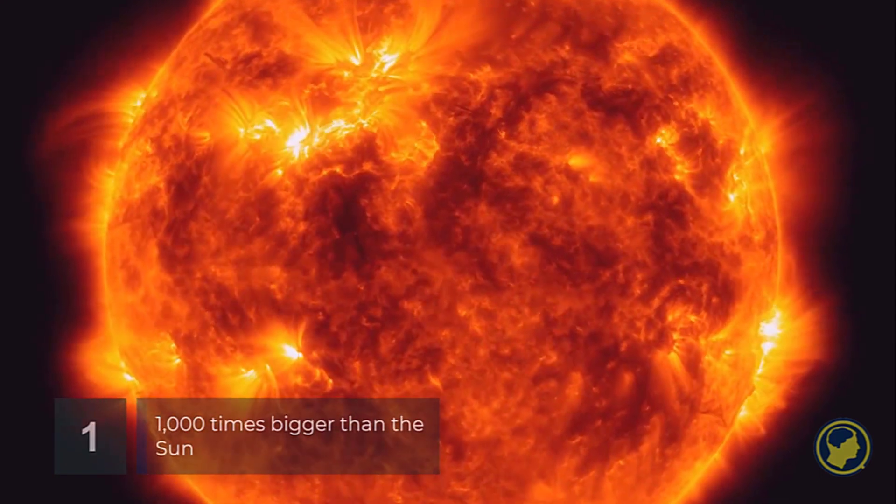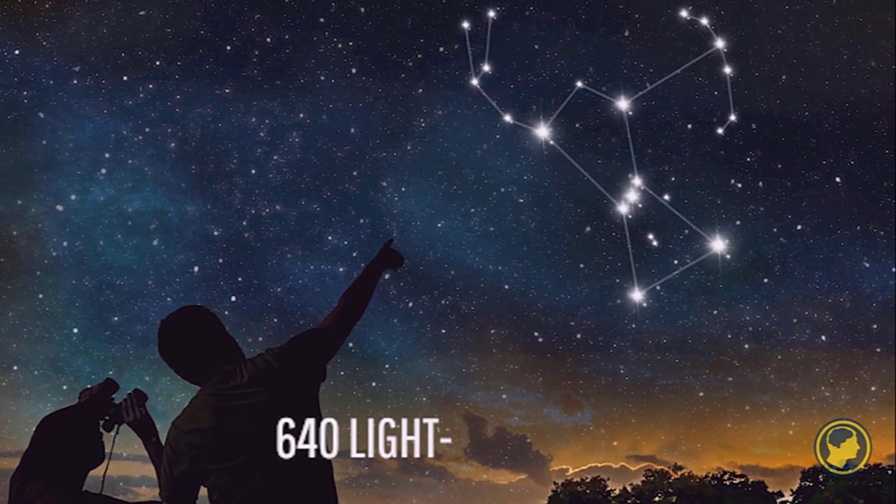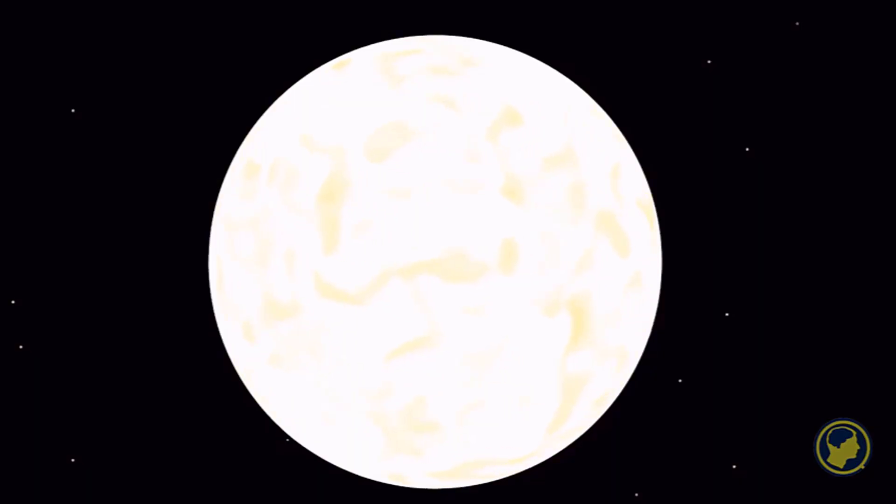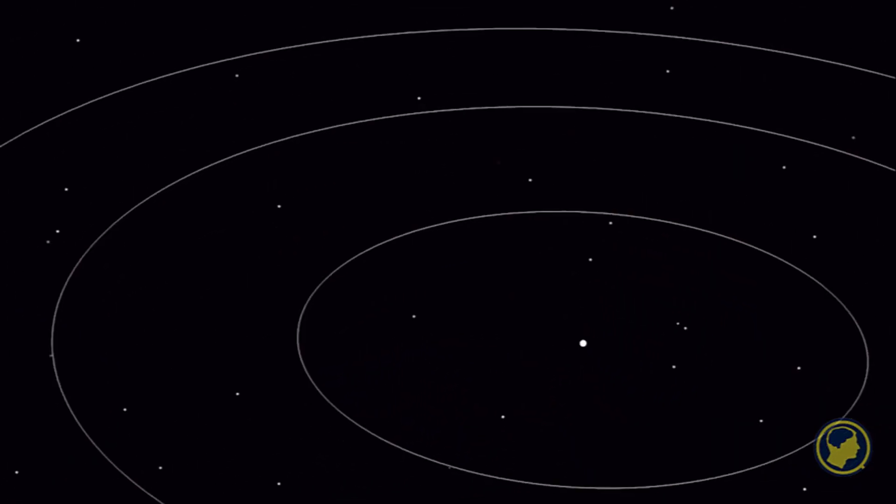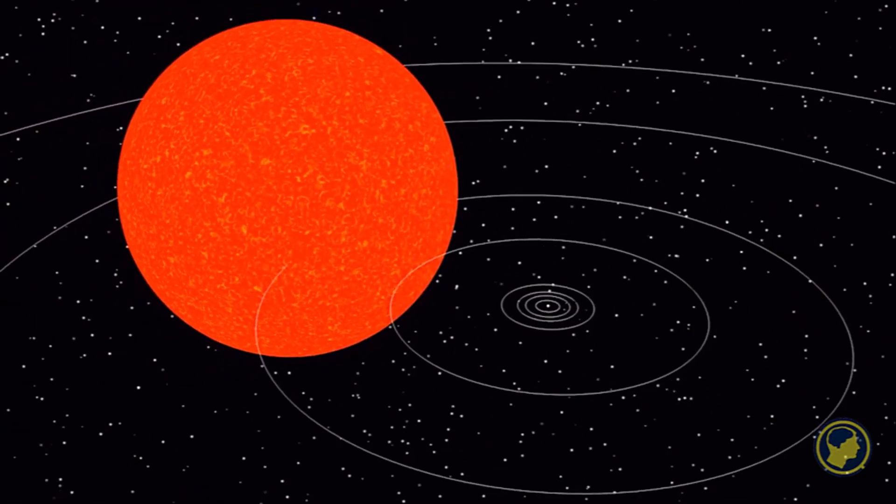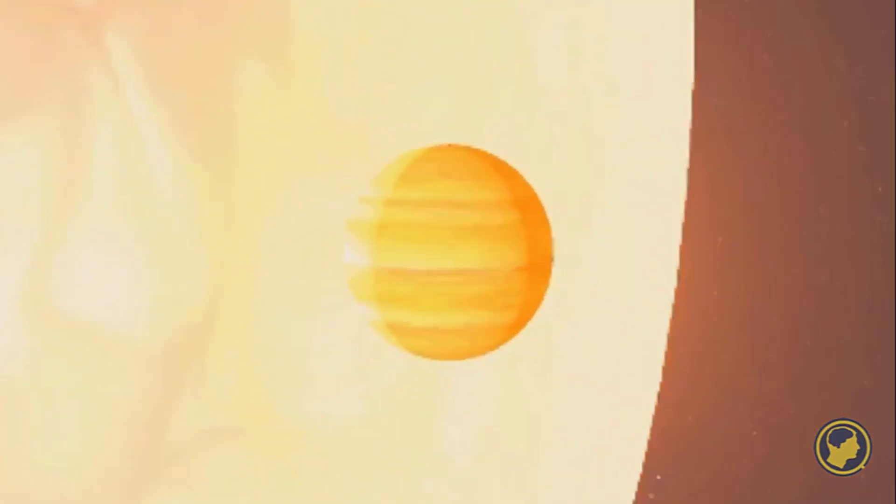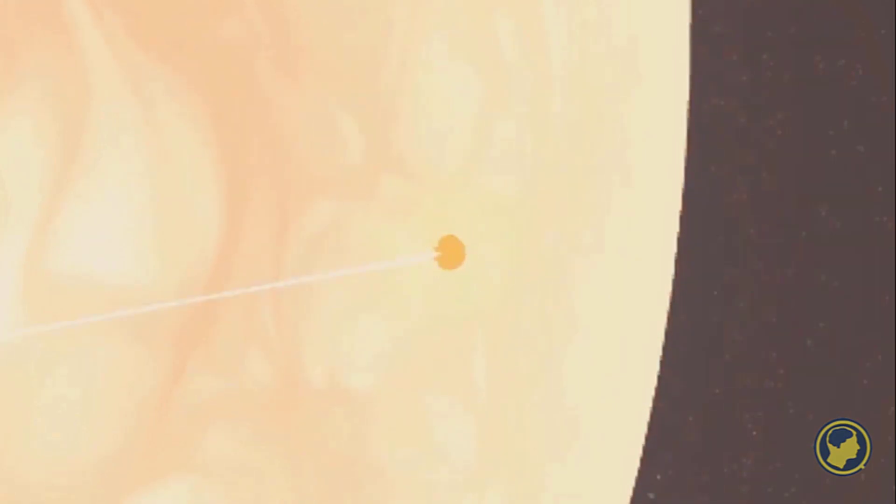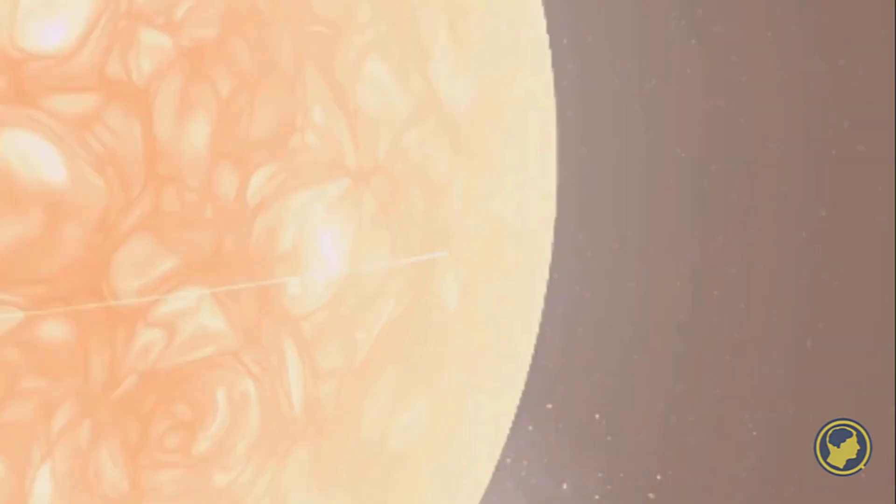Betelgeuse is a red supergiant star located 640 light years away. It is somewhere between 10 to 20 times the mass of the sun, but 700 to 1000 times its radius. If it replaced our solar system's sun, its surface would reach the asteroid belt and extend out towards the orbit of Jupiter.